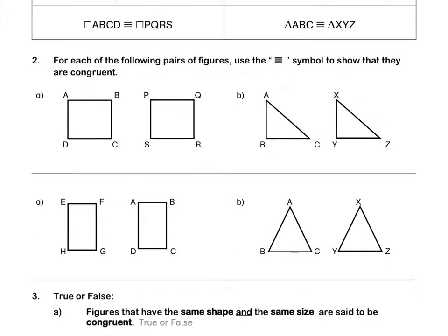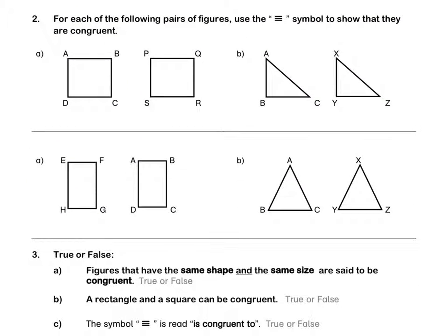Question 2. For each of the following pairs of figures, use the 'is congruent to' symbol to show that they are congruent. For A, square ABCD is congruent to square PQRS.